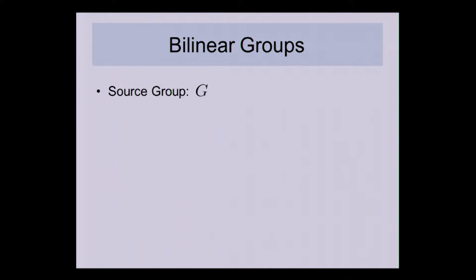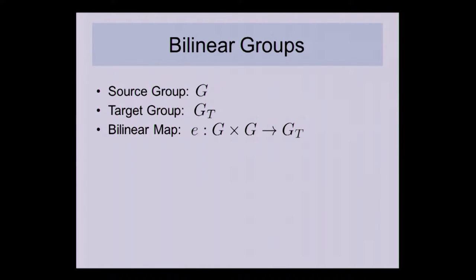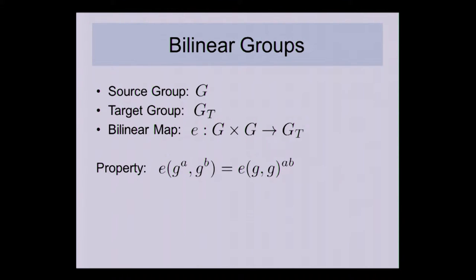The particular construction we're going to look at uses bilinear groups, which contain a prime order source group, a target group G_T of the same order, and a bilinear map that takes in two source group elements and returns a target group element. This satisfies the property that e applied to g^a and g^b returns the target group element e(g,g)^(ab).